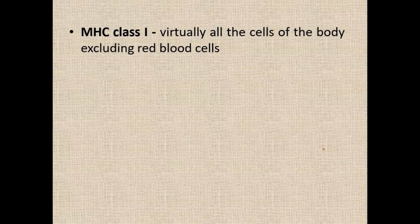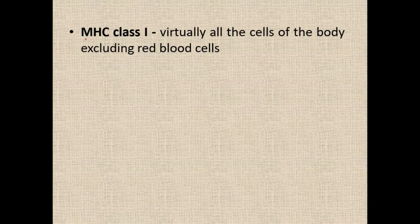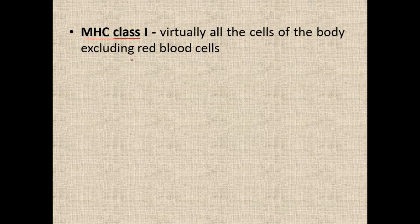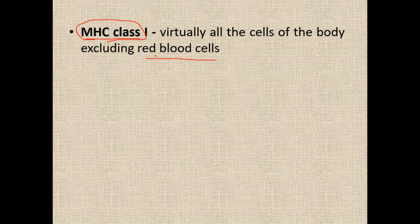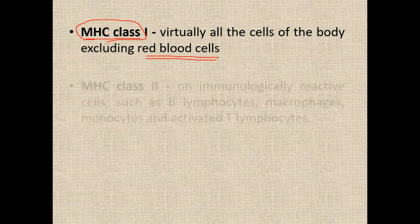There are MHC class 1, MHC class 2, and MHC class 3. MHC class 1: virtually all the cells of the body, excluding red blood cells. That means MHC class 1 antigens are present on all the cells of the body but not on red blood cells.